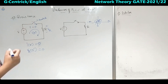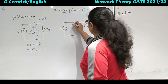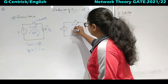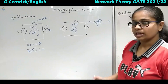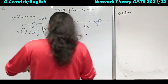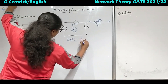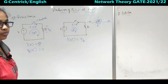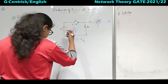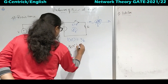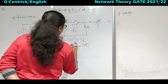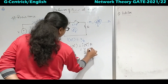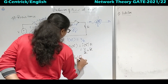Now we will analyze after closing the switch, that is at t=0+. At t=0+ there will be current flowing. I(0+) will be nothing but V/R. When it is V/R, there will be some voltage present. Vr(0+) is nothing but I(0+) × R, and since I(0+) = V/R, Vr(0+) is equal to V.